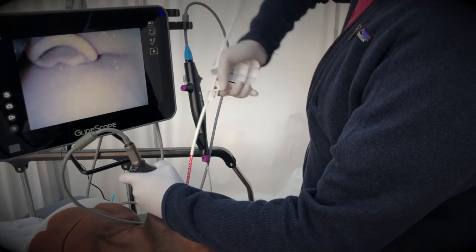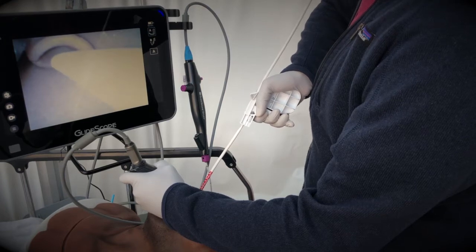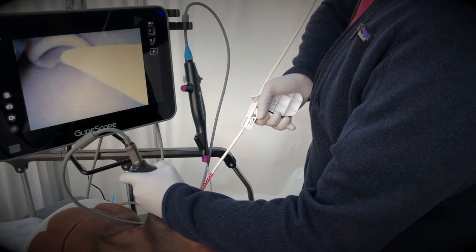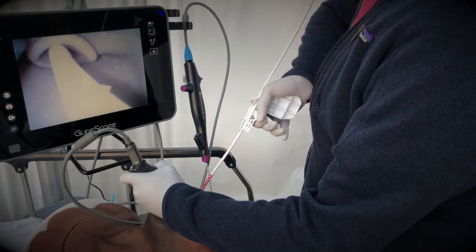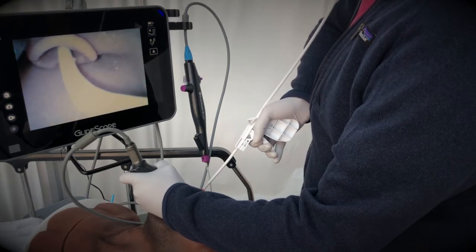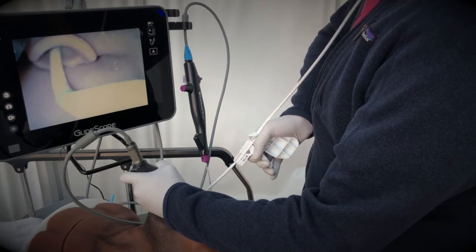and once you're in the hypopharynx let go of the trigger so that the tip takes on its natural curve, at which point you can then advance the tip past the glottic opening.